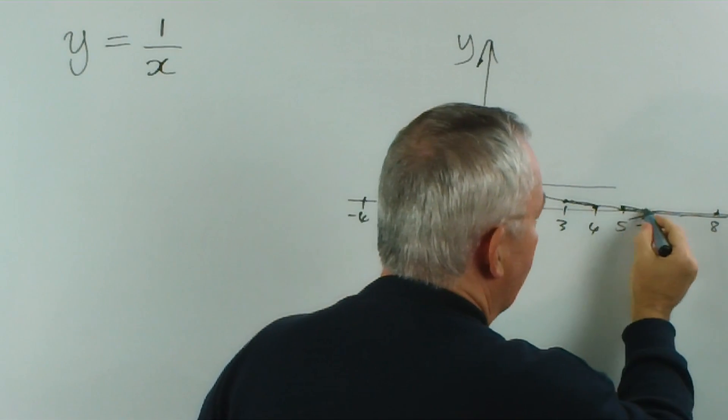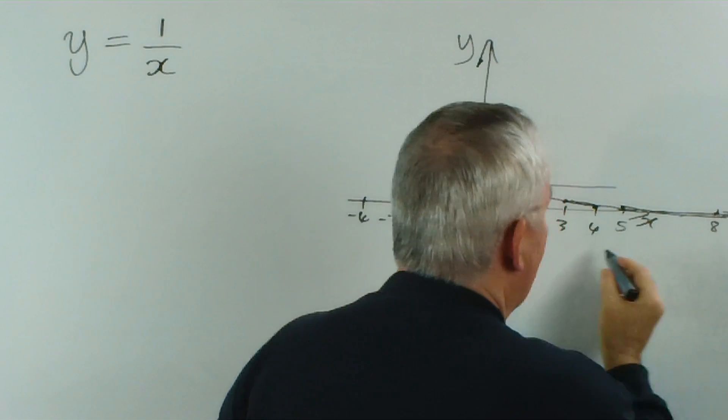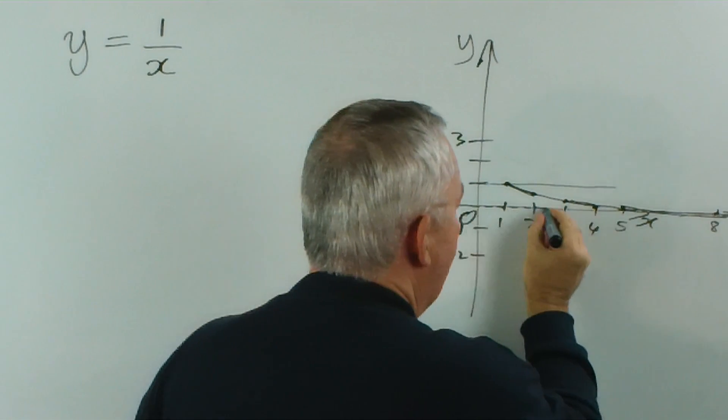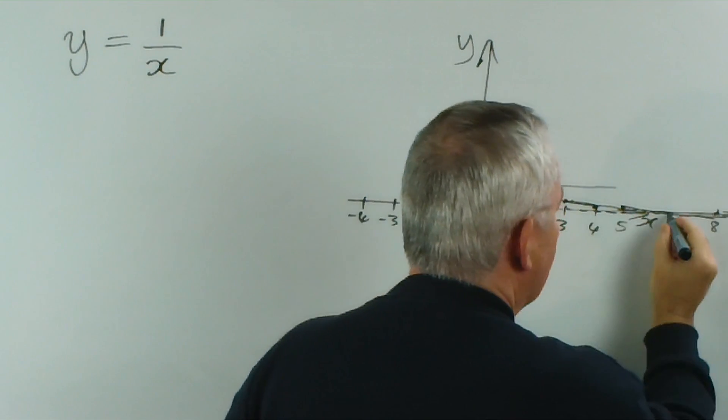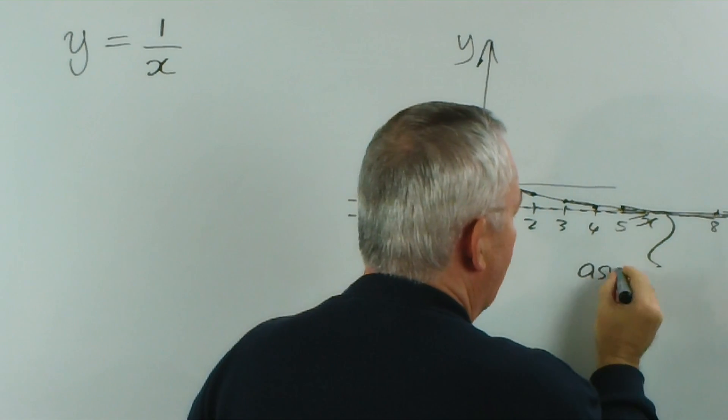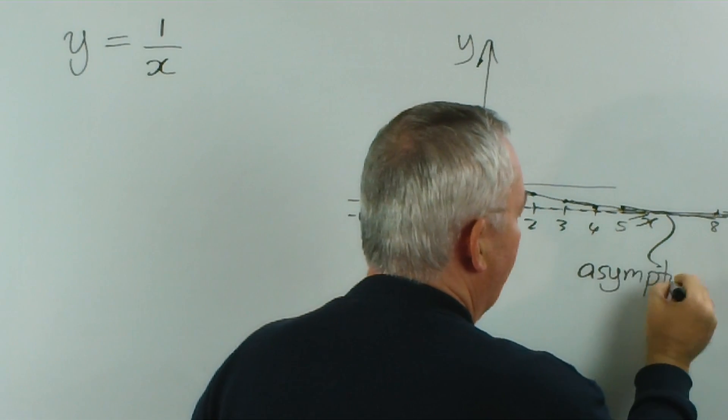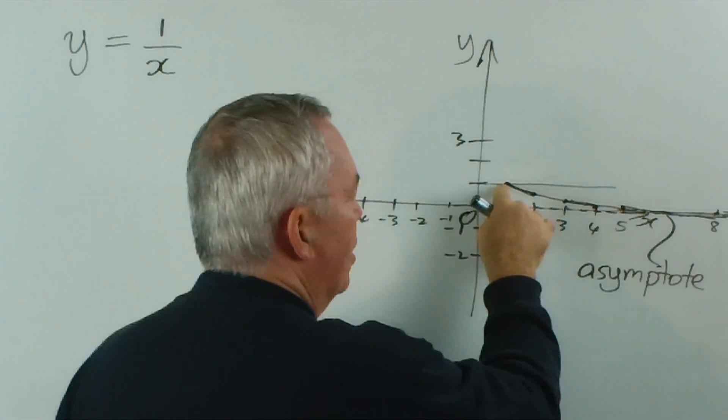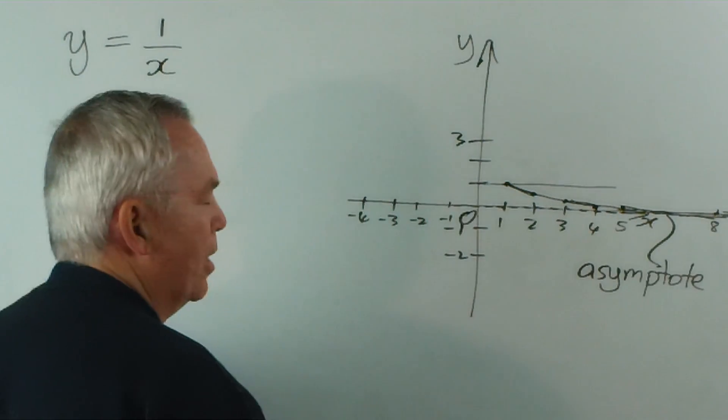And this is what we call an asymptote. The line here, the axis, would be the asymptote. So I'll label it. And you can see that the graph of the function gets closer and closer to it.